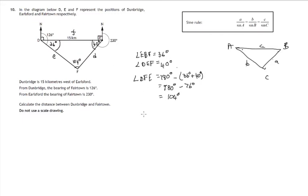So in this triangle DEF, let's use the sine rule, but we'll write it down as D over sine D equals E over sine E equals F over sine F. And let's see what we know.